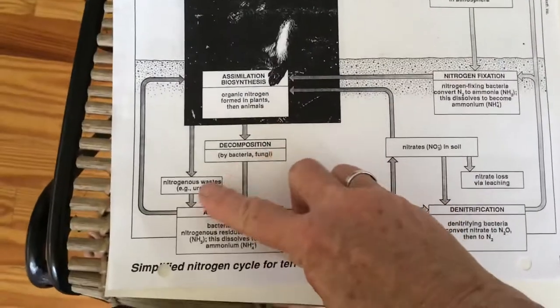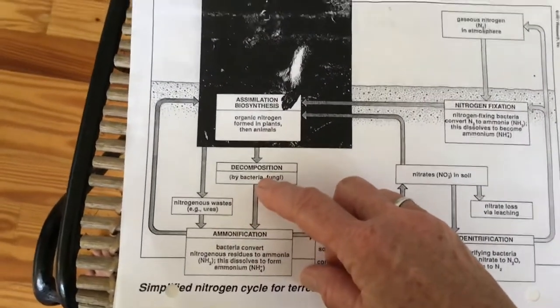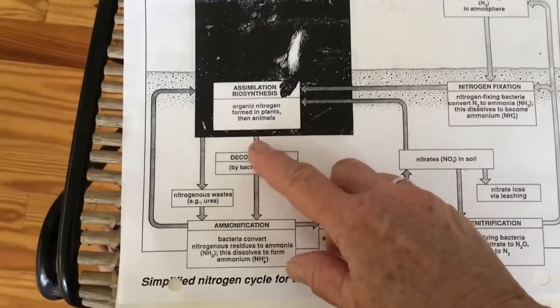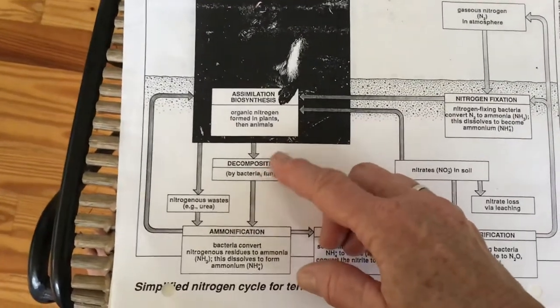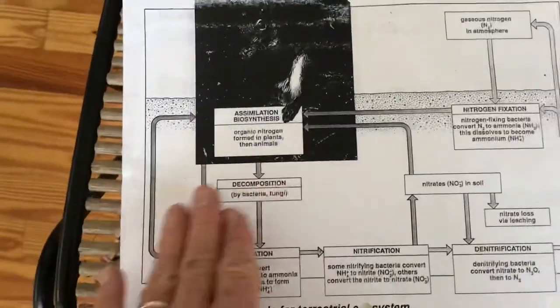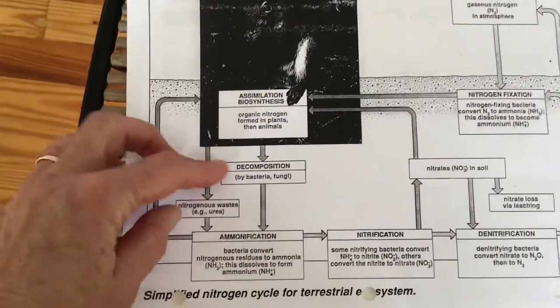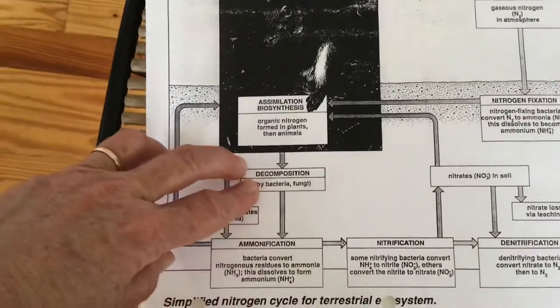As they're returned back to the soil, bacteria are going to help break these down. One of the ways they're going to break them down is they're going to reduce some of these big carbon pieces into smaller carbon pieces. That's actually part of decomposition, not per se part of the nitrogen cycle, although it's a big part so some bacteria might be involved in that.